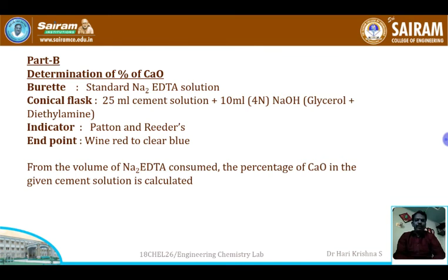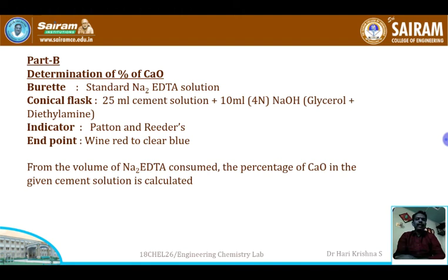Using a pipette, 25 ml of the cement solution prepared earlier is taken. We add 10 ml of 4N NaOH, which is a mixture containing glycerol and diethylamine. The NaOH serves two purposes: it acts as a buffer to maintain pH 12 to 14, and also masks the magnesium ions to prevent them from interfering in the reaction.